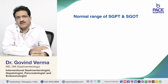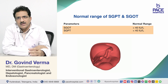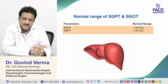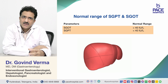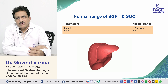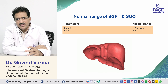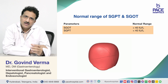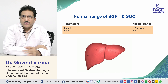The normal range for both SGOT and SGPT is usually below 40. Recent guidelines suggest SGPT more than 35 is considered elevated. Normal values may vary by gender, but generally a normal value is below 35 to 40.